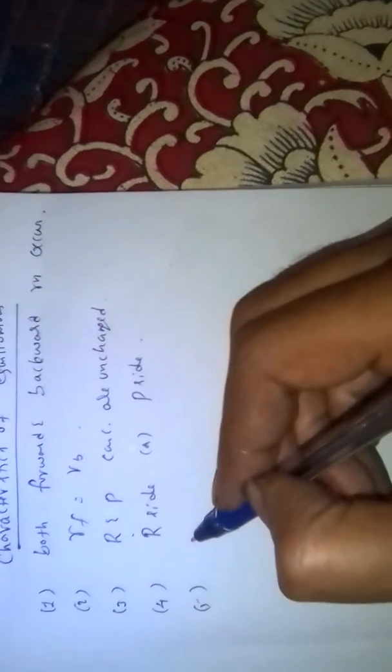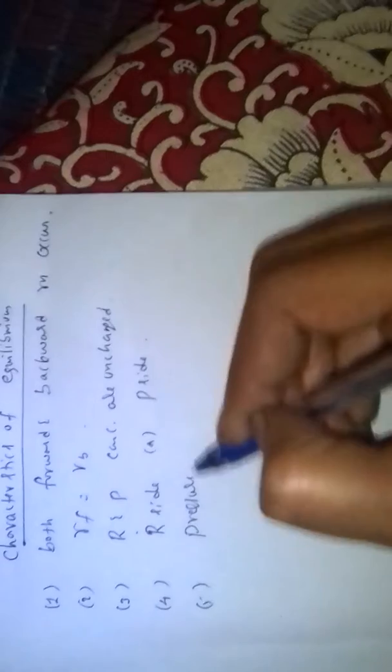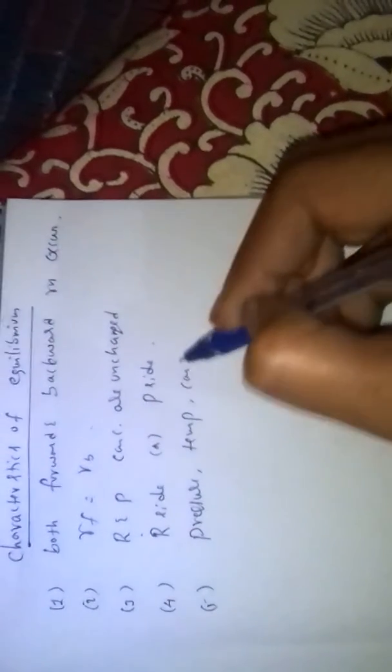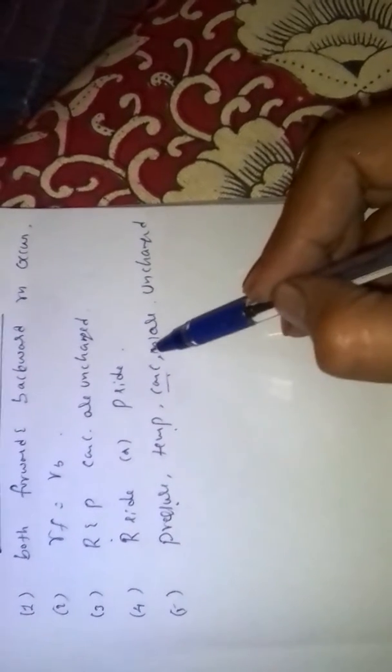At equilibrium state, properties like pressure, temperature, and concentration of reactants and products are unchanged. Constancy in pressure, temperature, concentration, and color can be used to identify the equilibrium state.